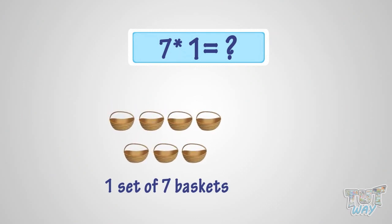What is 7 multiplied with 1? It is the same as one set of 7 baskets. So, it is 7 baskets. That is, 7 multiplied by 1 is 7.